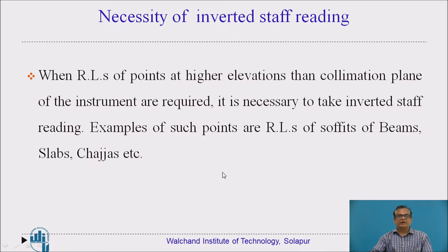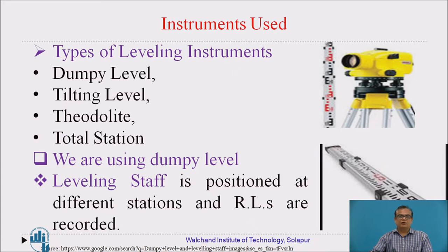What is the necessity of this inverted staff reading? When RLs of such points are required which are at a higher position than the collimation plane level of the instrument, we have to take inverted staff reading. Such points are soffits, beams, chajjas. Instruments used for this purpose include dumpy level, tilting level, theodolite, total station, and many more. We are using a dumpy level for this part of the study. The leveling staff, generally 4 meters in height with readings marked on it, is held at the position whose RL is to be found and the reading is recorded.